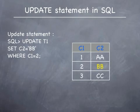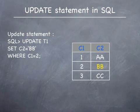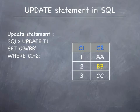Here is an UPDATE statement that is written at the SQL prompt as a SQL command. The command that is written is UPDATE T1 SET C2 equal to 'BB' where C1 equals 2. In this example, the column C2 is taking a value BB against the row where C1 takes the value 2.